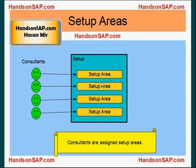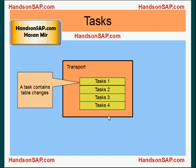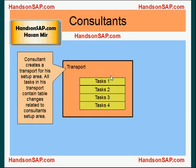A transport is simply a group of tasks. This transport has multiple tasks — for example four tasks — and each task basically contains changes to a table. These are instructions for changing something in a table, so one transport is essentially a group of table changes. Consultants create a transport for their own setup area, so all tasks within a consultant's transport contain changes to the tables belonging to that setup area.